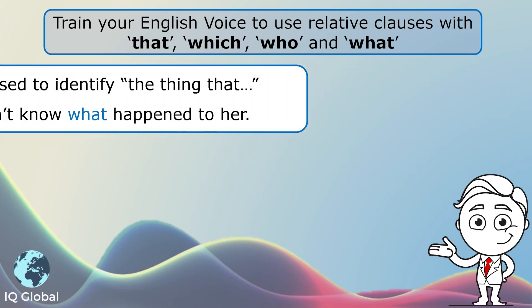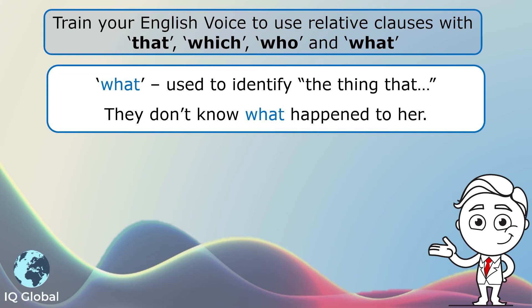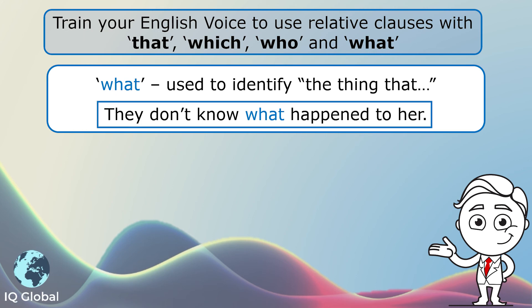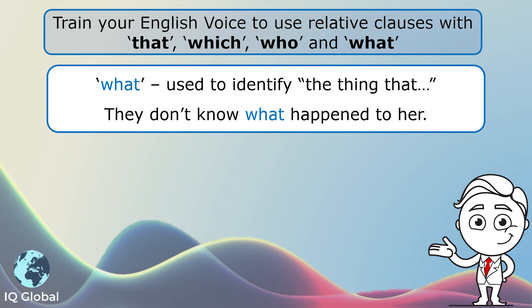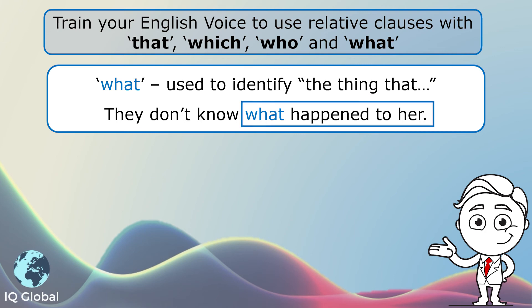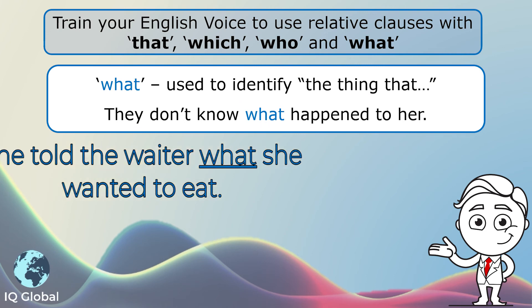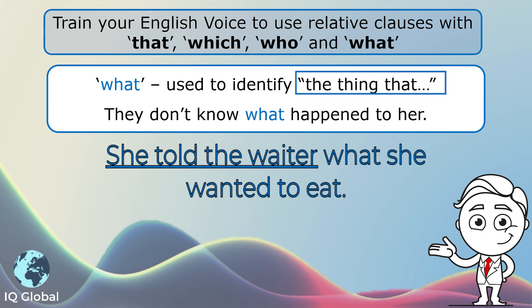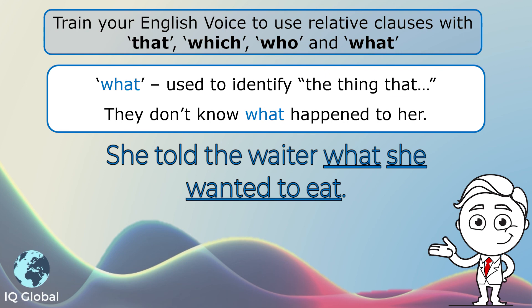And the last one: 'what'. What is used to identify the thing that. For example: 'They don't know what happened to her.' What is identifying the thing that they don't know — what happened to her. Another example: 'She told the waiter what she wanted to eat.' Here, 'what' is identifying the thing that she told the waiter — what she wanted to eat.